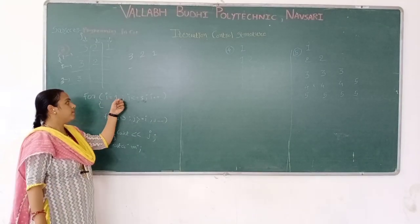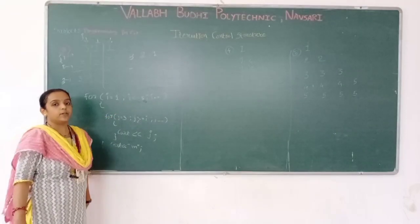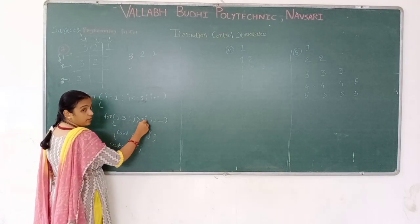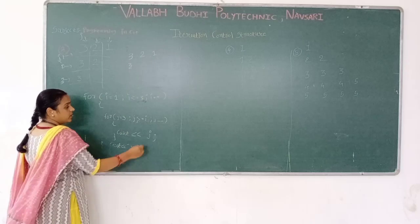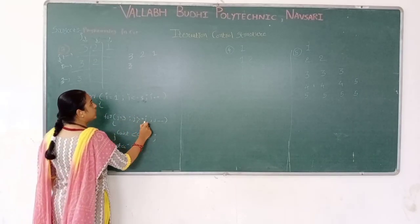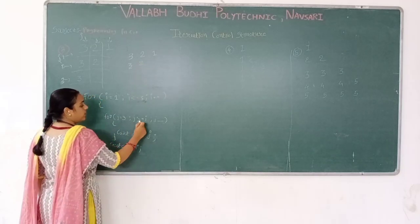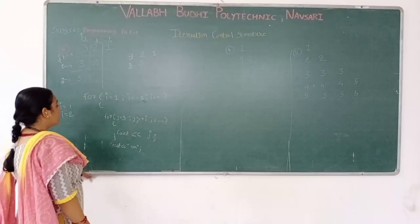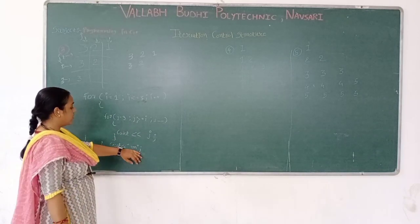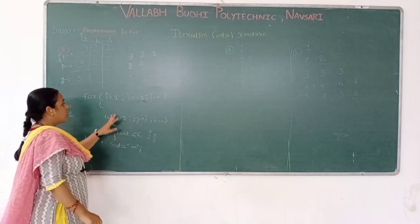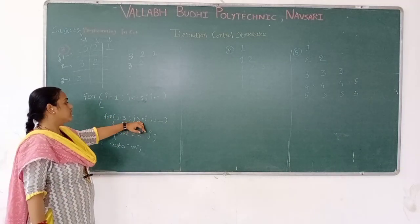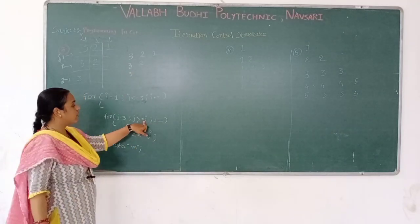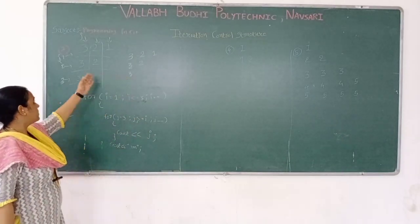In the next row, i becomes 2. i is equal to 2. j is equal to 3. 3 is greater or equal to 2, true. j minus minus — 3 becomes 2. 2 is greater or equal to 2, true — print 2. j minus minus, 2 becomes 1. 1 is greater or equal to 2, it is false. So the inner loop ends. Then i becomes 3. 3 is greater or equal to 3, true — print 3. Then j becomes 2. 2 is greater or equal to 3, it is false. The looping is closed and our pattern is printed.